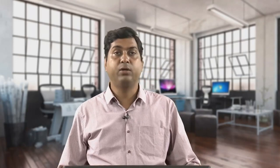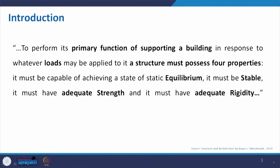The basic or primary function of a structure is to support the building against all imposed loads. To perform this primary function, a structure must possess four properties. In order to resist all loads — dead load, live load, thermal load, lateral load, dynamic load, imposed load, and sudden loads — the structure must have four properties.